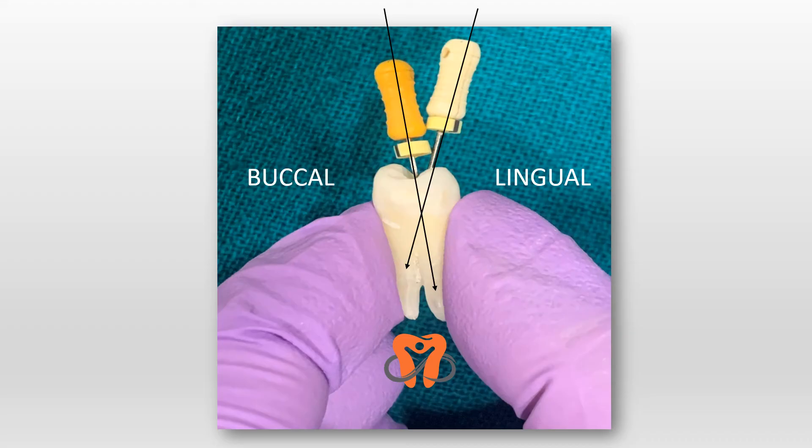The buccal and the lingual root canal orifice is positioned in such a manner that in order to enter into the buccal orifice, we have to position our file against the lingual cusp in this manner, and then in a diagonal direction we enter into the root canal orifice of the buccal canal. Similarly, for the lingual, to enter into the lingual orifice, we position our file against the buccal cusp and then in a diagonal manner enter into the lingual root canal. I hope you followed this well.